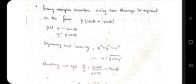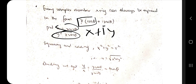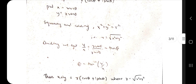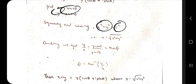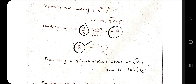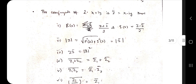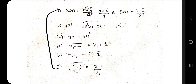Every complex number can be expressed in the form r(cos θ + i sin θ), also known as cis θ, where x = r cos θ and y = r sin θ. Squaring and adding gives r = √(x² + y²), and dividing y by x gives tan θ, so θ = tan⁻¹(y/x). These two formulas will be extensively used in problems. The conjugate z-bar is x − iy.